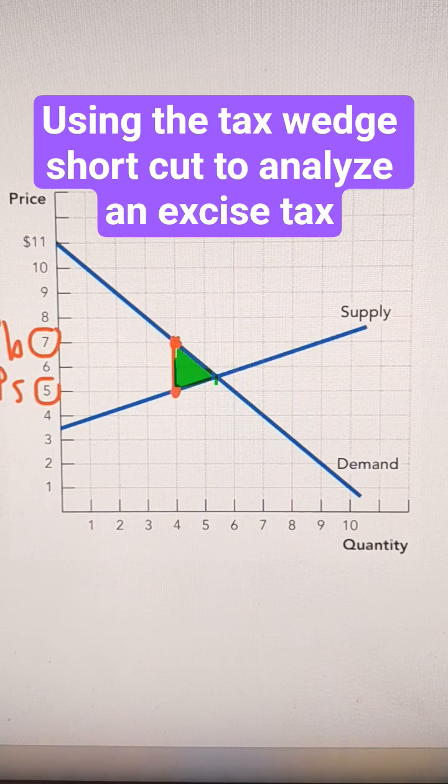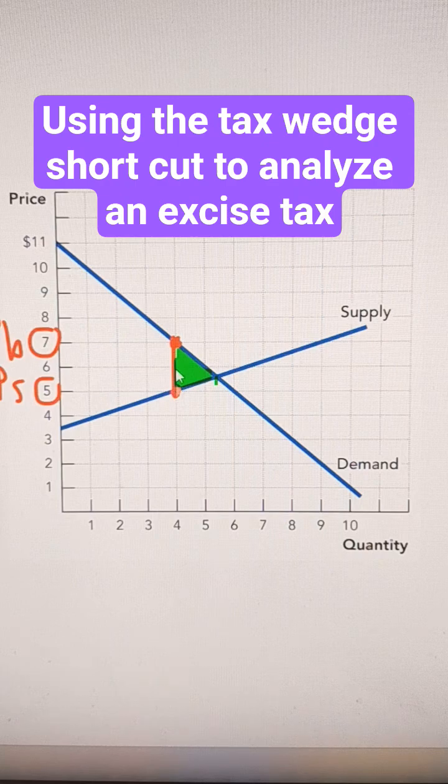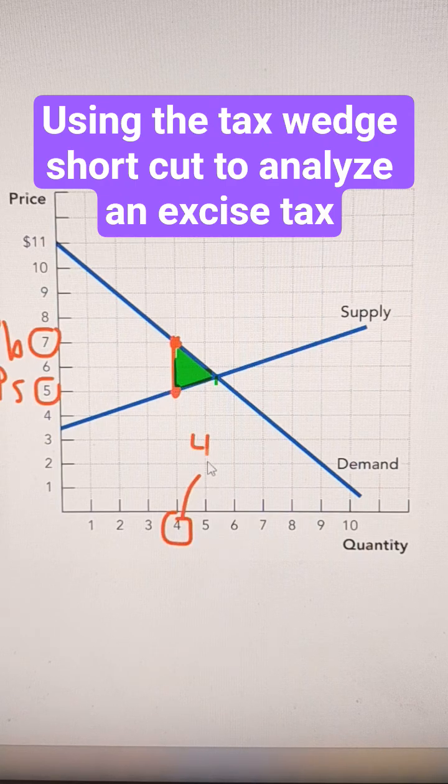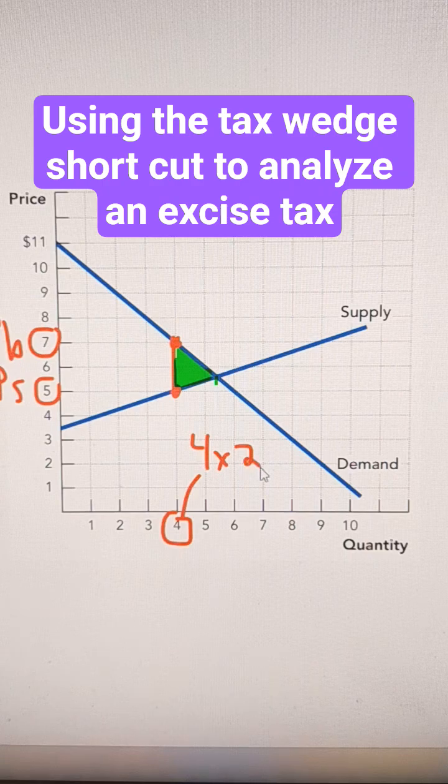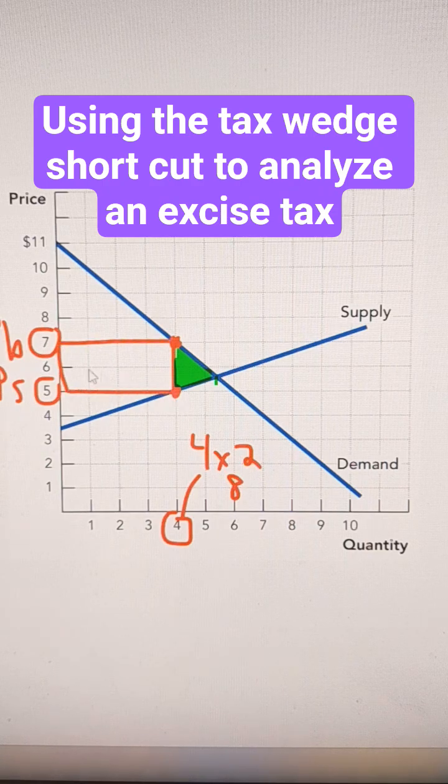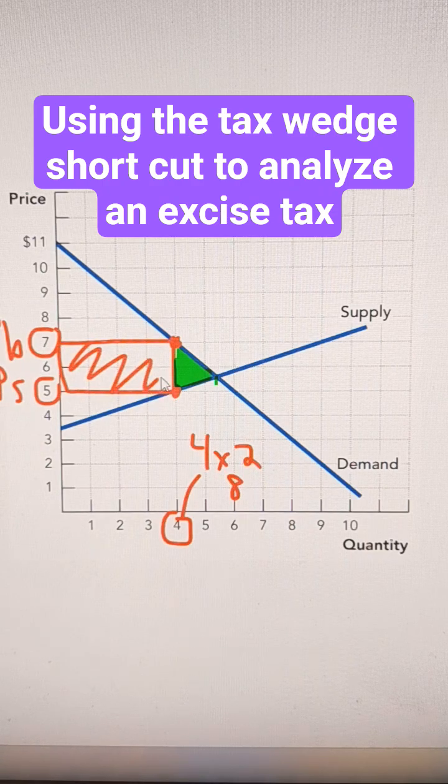And then the revenue on the tax, just find where the tax wedge gives you a quantity. So it would be $4, $4 times $2. So it would be $8 would be the tax revenue. And that is the area of this orange box that I have right here.